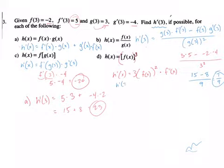So h prime of three is going to give us three times f of three cubed. F of three was negative two. Sorry, negative two squared, I said cubed, meant squared. Multiplied by f prime of three which is five.